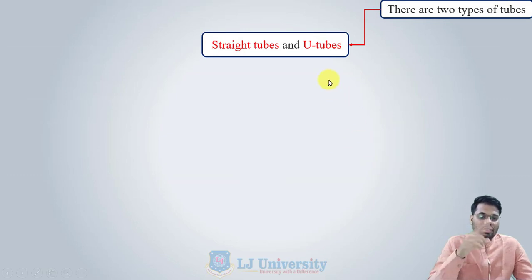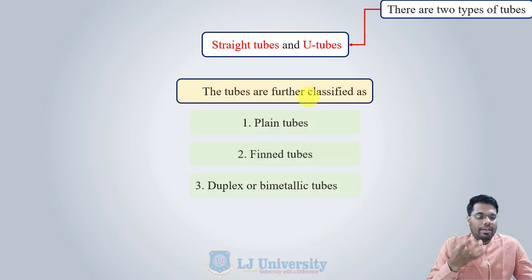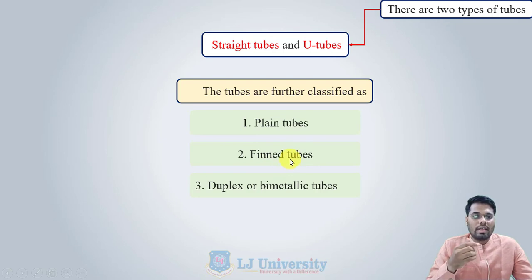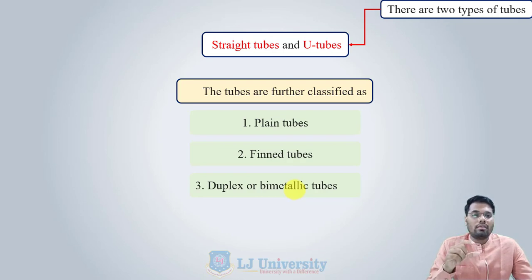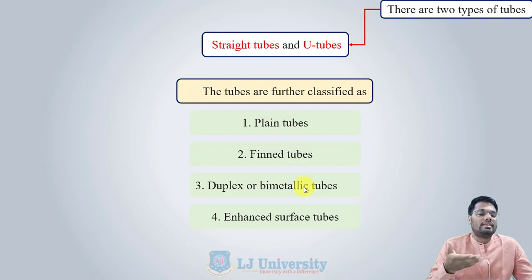There are generally two types of tubes — straight tubes and U-tubes — but they can be further classified into plain tubes, finned tubes, and duplex or bimetallic tubes. Plain tubes have no extended surface or fins. Finned tubes have extra or enhanced surface on the outer surface. Duplex or bimetallic tubes are used for special applications where both the outer and inner surfaces are provided separate coatings to withstand corrosiveness or fouling.